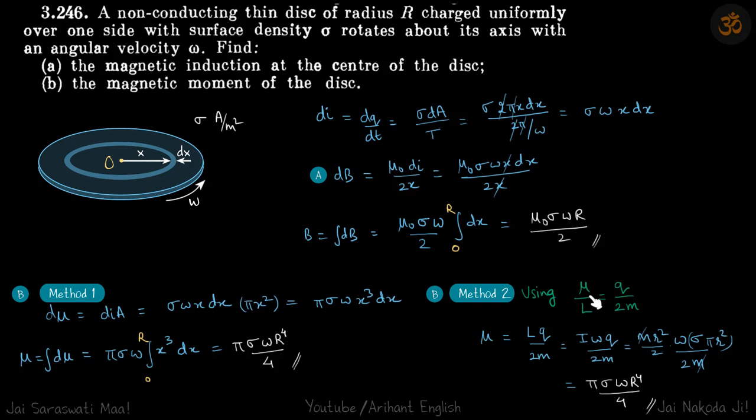So μ equals L times q by 2m. L for a rotating disc is Iω, and I is mr²/2. This becomes mr²/2 times omega times q, where charge on the disc is sigma times πr², divided by 2m. m cancels and you get the same result as we got earlier.